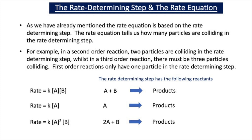Here are some examples. If rate = k[A][B], this is overall second order, so the rate determining step is: A + B → products. If rate = k[A], this is first order, so the rate determining step is: A → products. If rate = k[A]²[B], the rate is second order with respect to A and first order with respect to B — overall third order — so the rate determining step is: 2A + B → products.